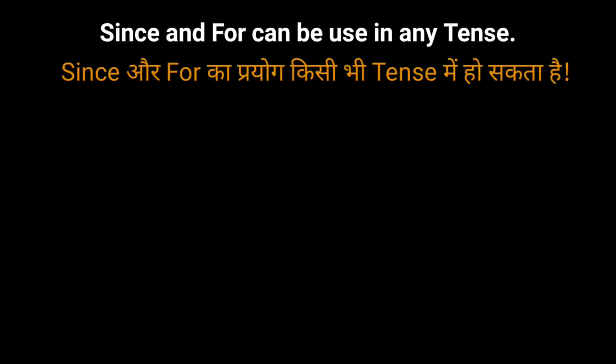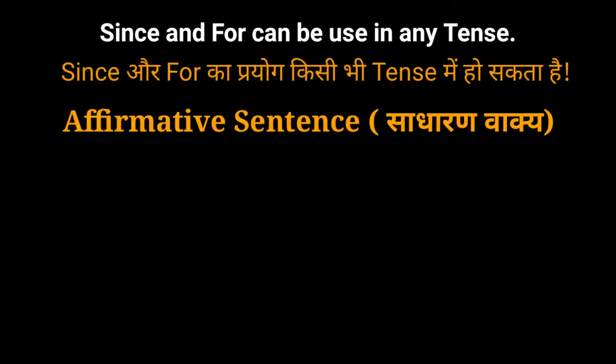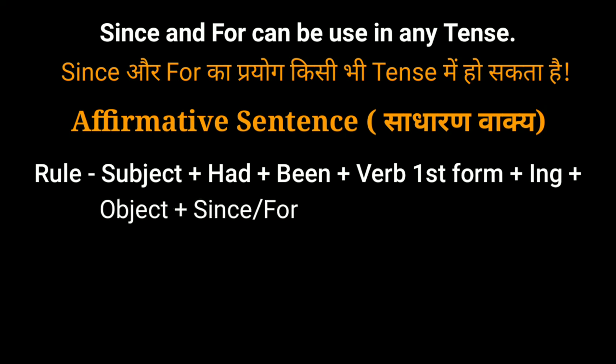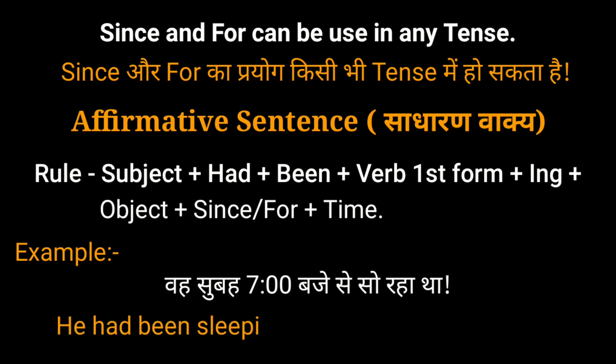Now affirmative sentences — साधारण वाक्य. For past perfect continuous tense we use: Subject + had + been + verb (first form + ing) + object + since/for + time. For example, वह सुबह सात बजे से सो रहा था — He had been sleeping since seven in the morning. इस वाक्य में He subject है, had been helping verb है, sleeping अर्थात verb की first form + ing का प्रयोग किया गया है, सात बजे से के लिए since का और सुबह के लिए time का प्रयोग किया गया है.